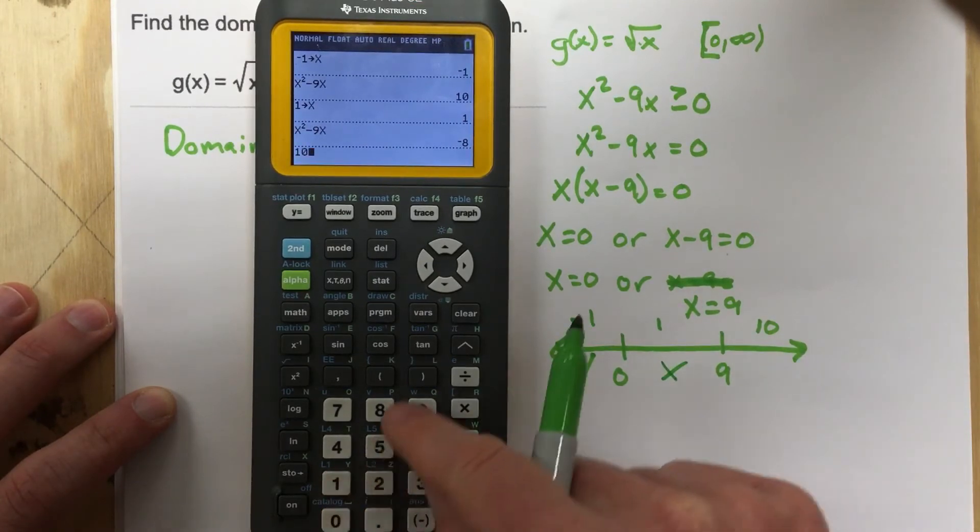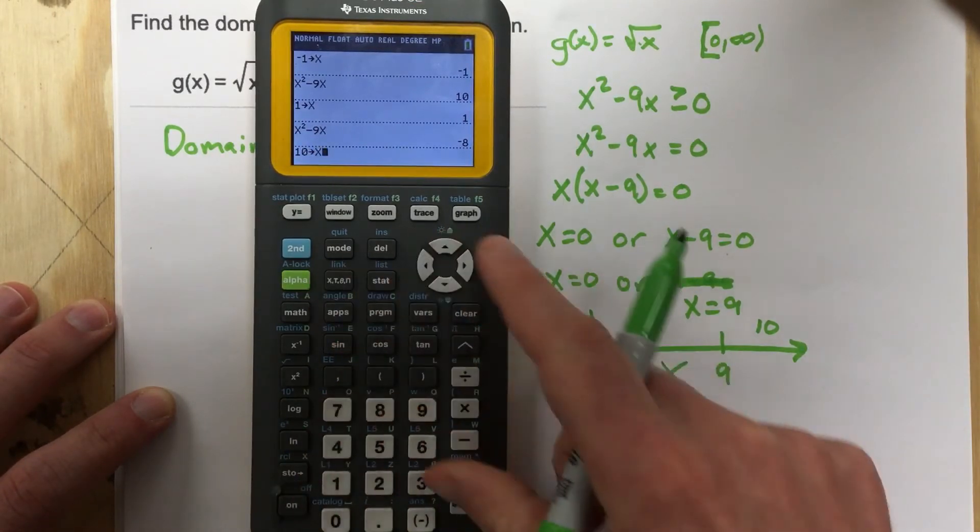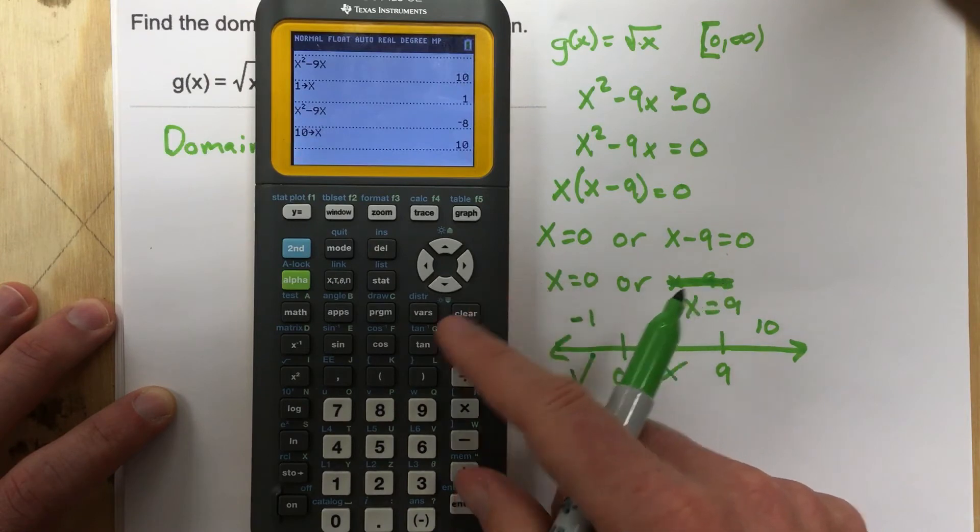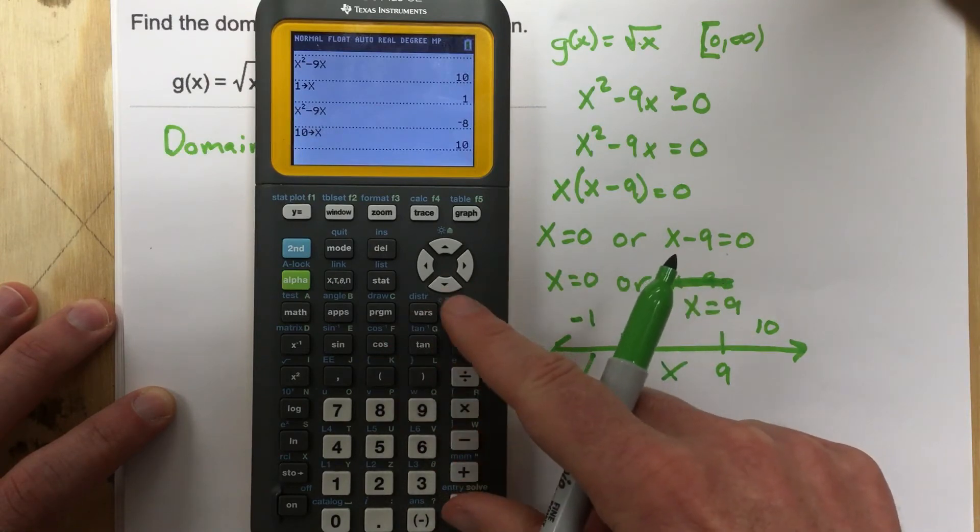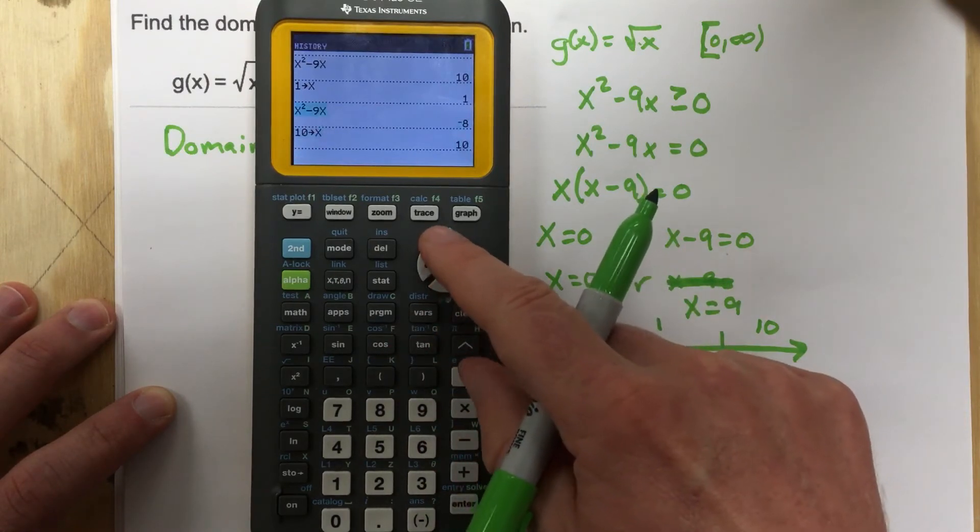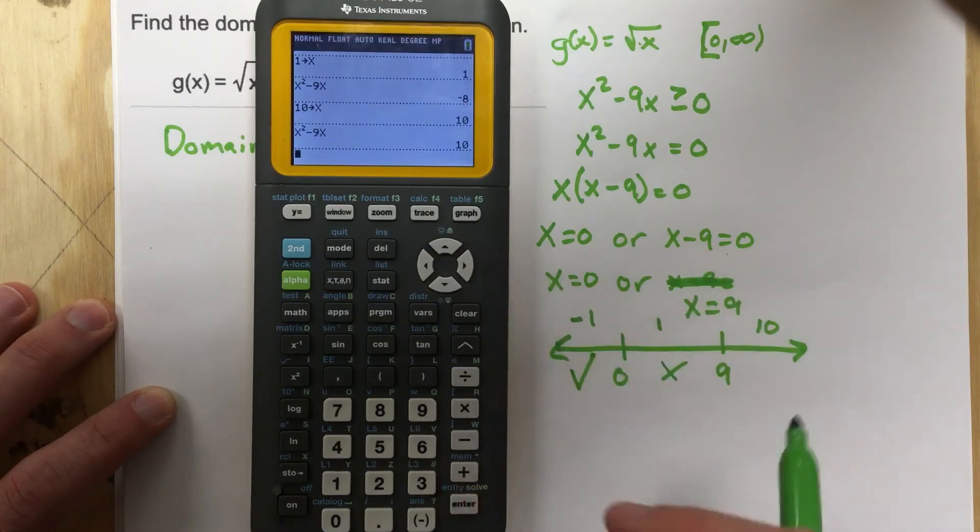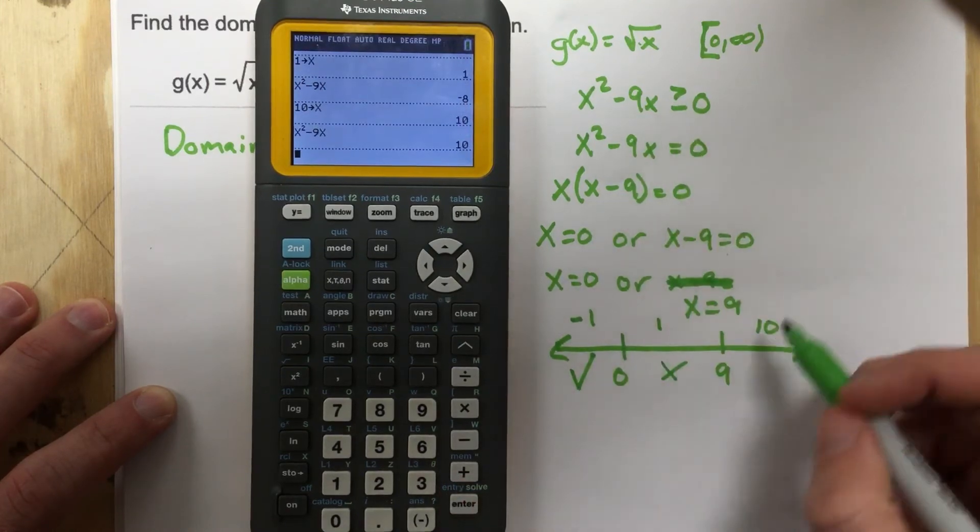And last but not least, 10 stored as x. And then I'm going to check that by grabbing that function again. I get 10. 10 greater than or equal to zero? It also works.